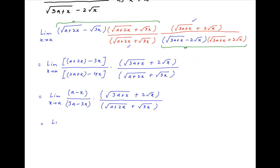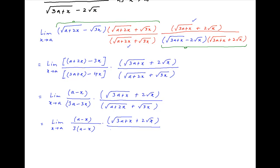A minus x cancels across the numerator and denominator. This is equal to limit x tending to a: a minus x divided by 3 times a minus x, multiplied by root of 3a plus x plus 2 root x, divided by root of a plus 2x plus root 3x. A minus x cancels across the numerator and denominator.